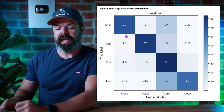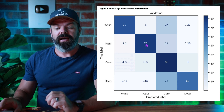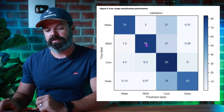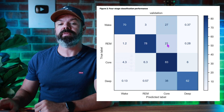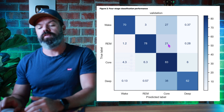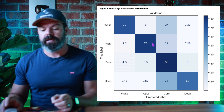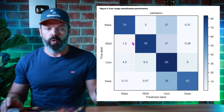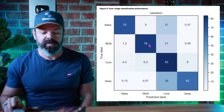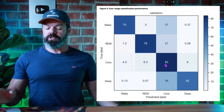When it comes to REM sleep, I've said they're dreaming — Apple agrees 78% of the time. 21% of the time they say it's core sleep, and there's a very small chance of the Apple algorithm marking true REM sleep as deep sleep or wake: 1.2% and 0.28% respectively. So very good with REM.